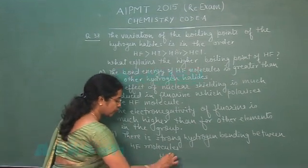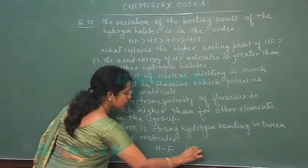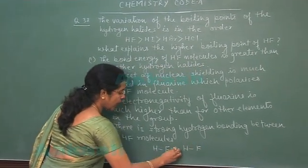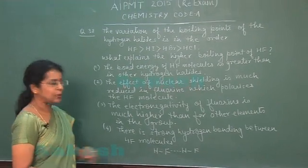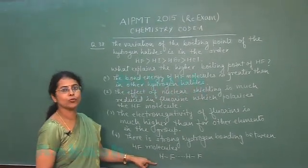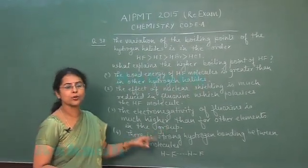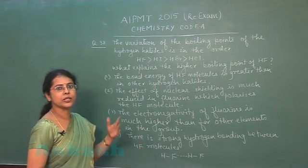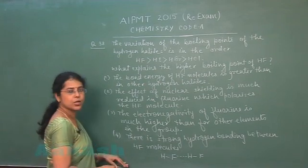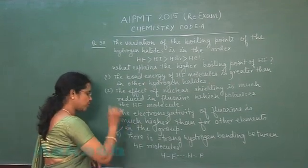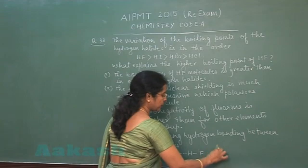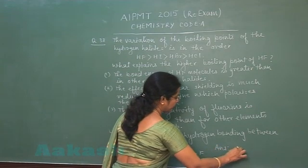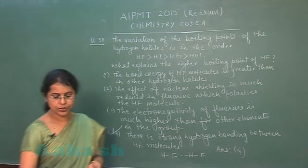So HF permits a strong hydrogen bonding between fluorine atom of one molecule and hydrogen atom of another molecule, due to which its boiling point increases very much. So correct option should be the fourth one. Fourth option is the correct answer.